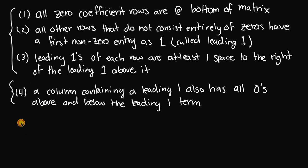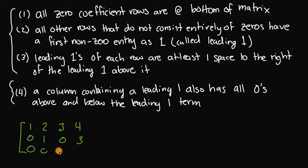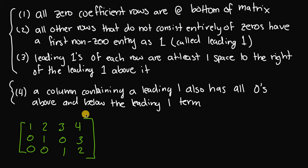Let's look at our first matrix: [1, 2, 3, 4 / 0, 1, 0, 3 / 0, 0, 1, 2]. Let's go through each rule to figure out if this matrix is in row echelon form, reduced row echelon form, or neither. Rule one says all zero coefficient rows are at the bottom. This matrix does not have any all-zero rows, so it satisfies rule 1.